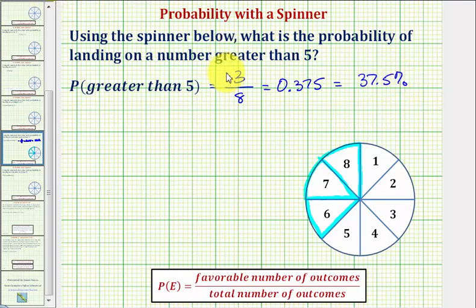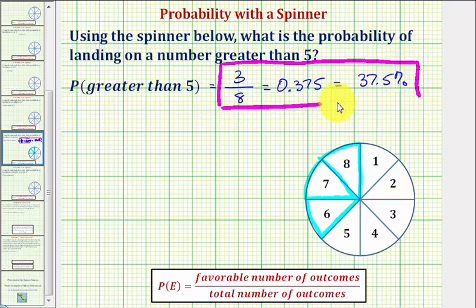So these are the three ways we can express the probability of the spinner landing on a number greater than five. If the probability is three-eighths, theoretically this means we expect to land on a number greater than five, three out of every eight spins.